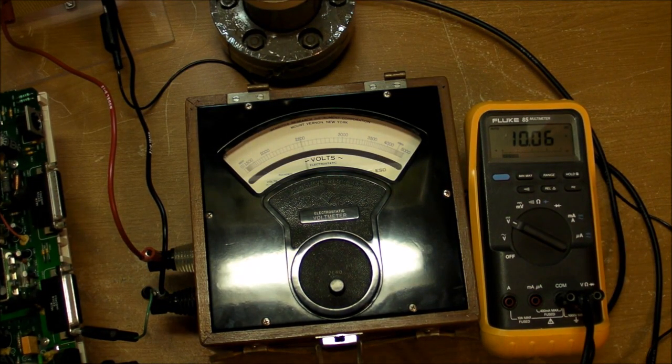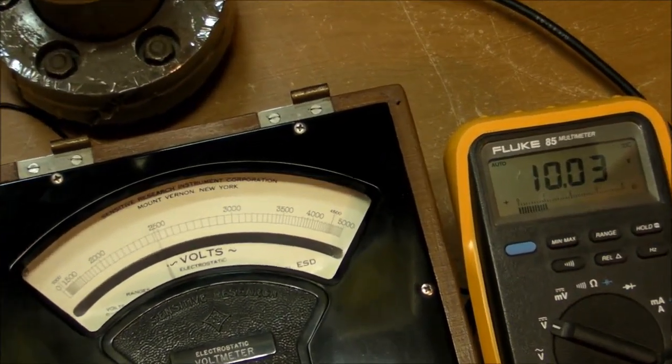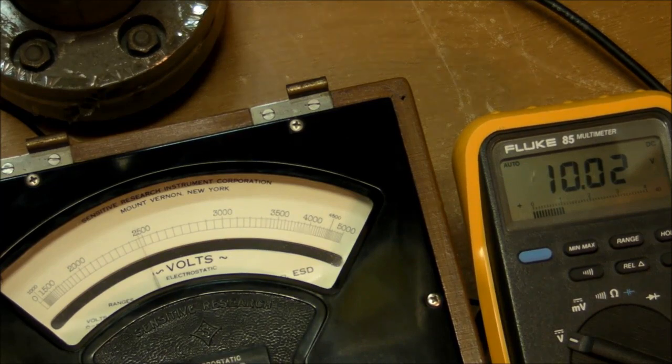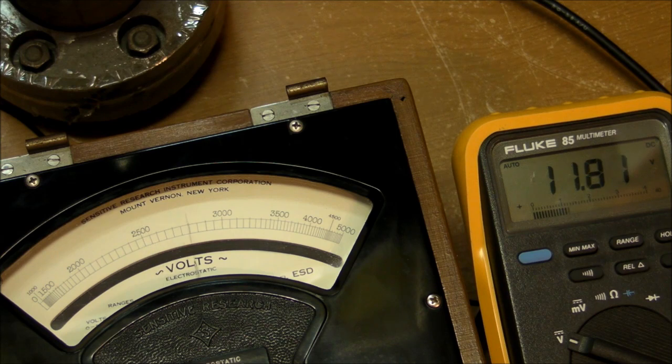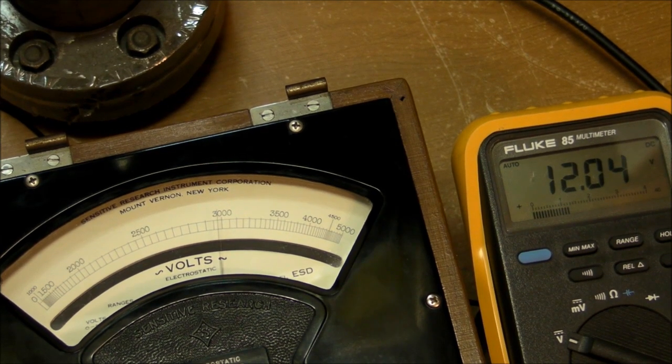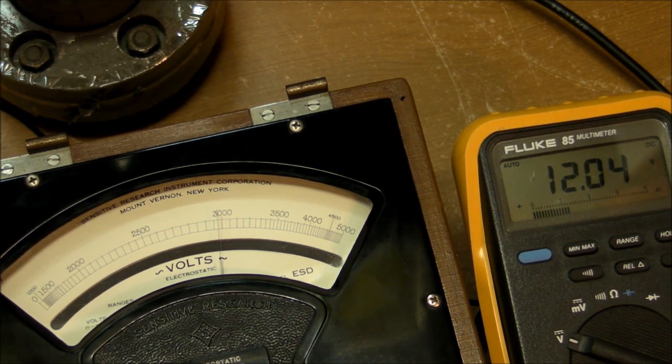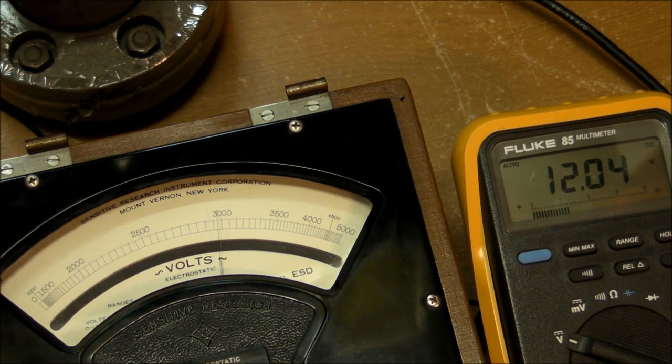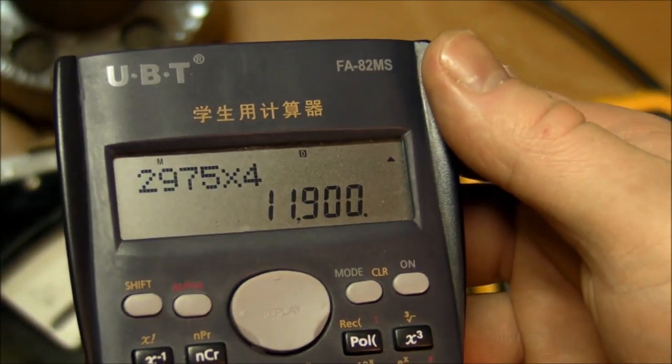Now with this 10 kV reading, the CRT brightness is turned up at maximum. Let's turn it down so we can increase the output voltage here and see what we get. So there's 12 kV on the Fluke DMM but on the Sensitive Research we're only getting 2975 volts, which if you multiply by four is 11,900 volts.